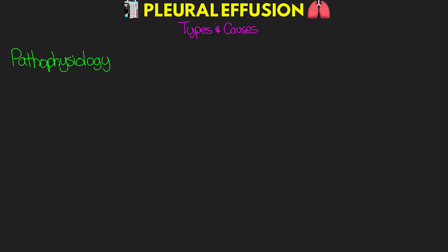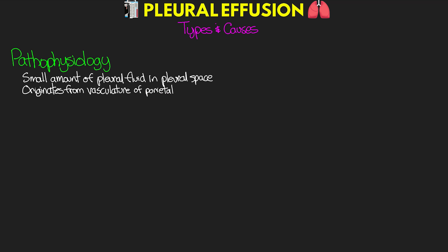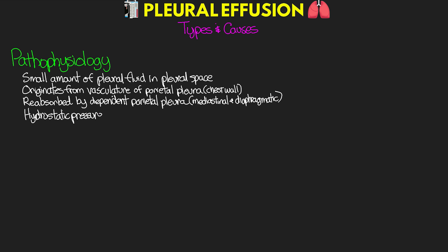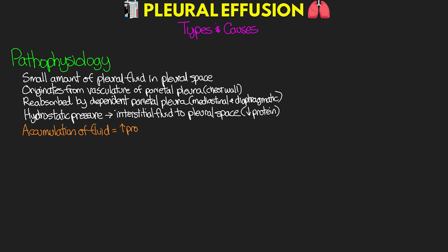Let's talk about pathophysiology. Normally we have a small amount of serous pleural fluid in the pleural space. This fluid originates from the vasculature of the parietal pleura — the pleura that lines the chest wall — and is reabsorbed by dependent parts of the parietal pleura, primarily in our mediastinal and diaphragmatic areas. Hydrostatic pressure from the vessels supplying the parietal pleura drives interstitial fluid into the pleural space, giving it a decreased protein count compared to serum. An accumulation of this fluid can result from increased production and/or decreased reabsorption.